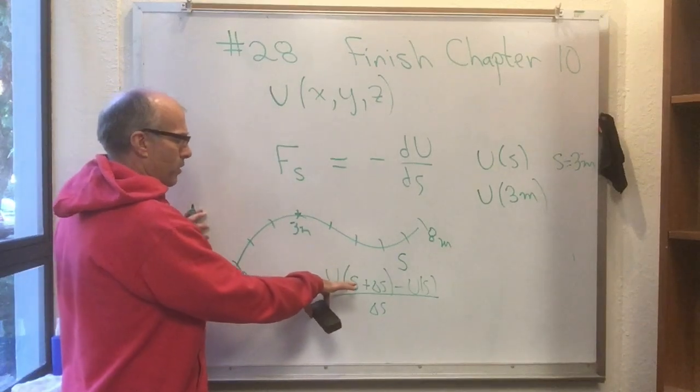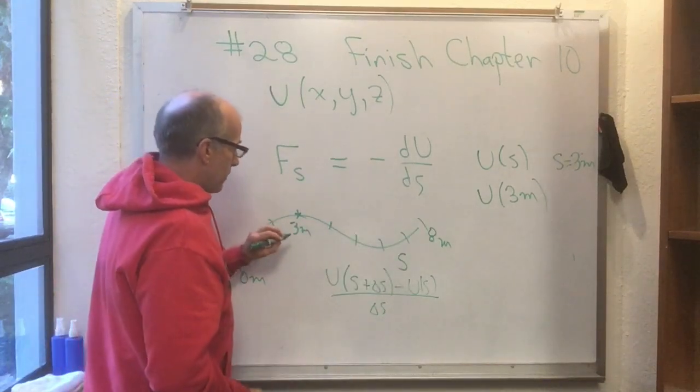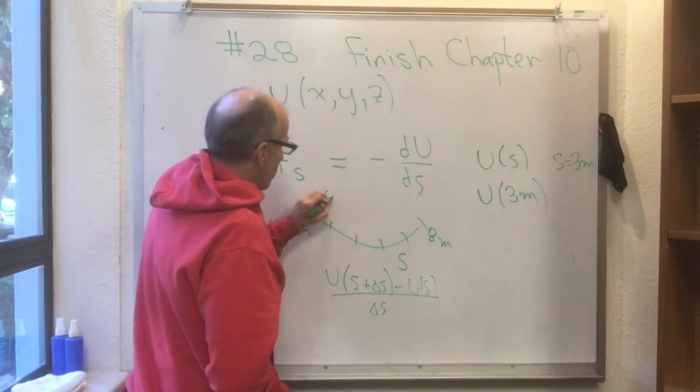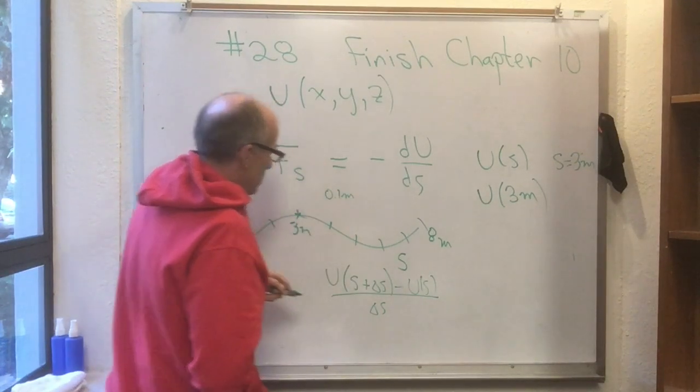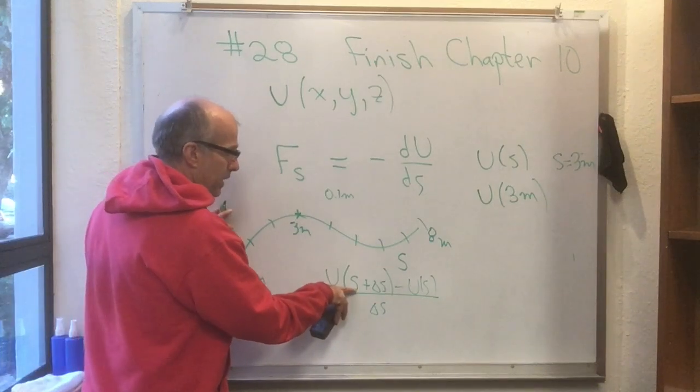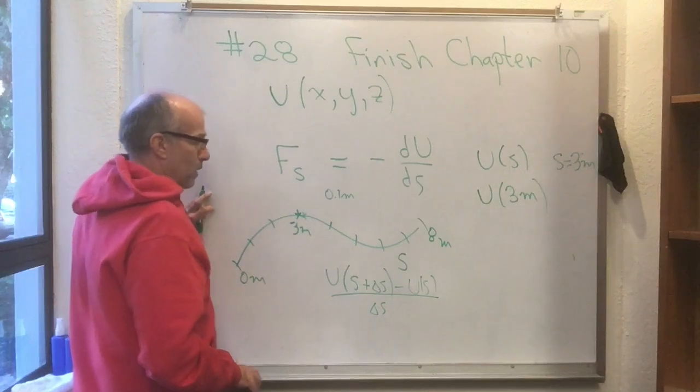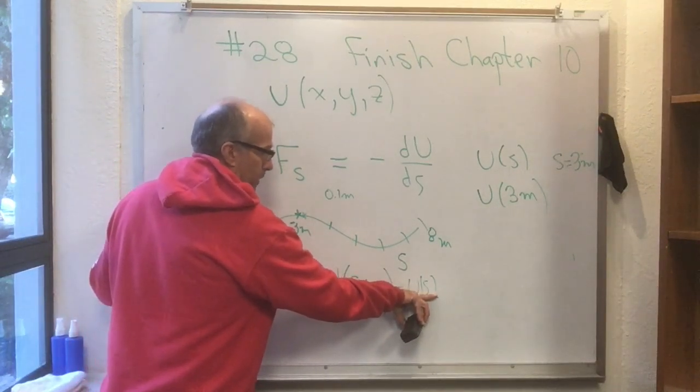So you want to make that a little more concrete, just like I was making it more concrete here. You could have delta S be 0.1 meters. So this says what's U at 3.1 meters? Which would be right there. What's U at 3 meters?